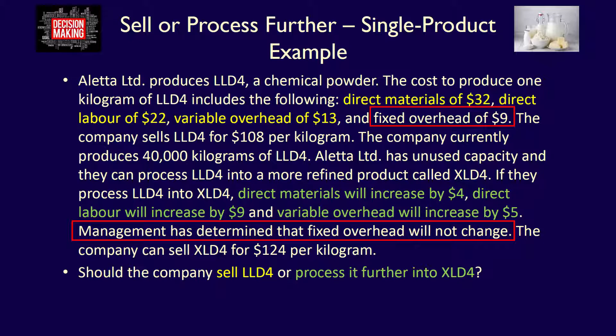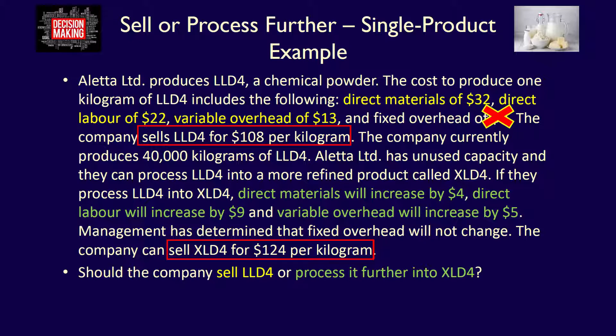Fixed overhead is $9 per kilogram for LLD4, and management feels it will remain $9 per kilogram for XLD4. Although fixed overhead is a future cost, it does not change between alternatives and is therefore irrelevant and can be ignored. Management can sell a kilogram of LLD4 for $108 and a kilogram of XLD4 for $124. These revenues are future revenues that change between alternatives, so they are relevant and must be taken into account.